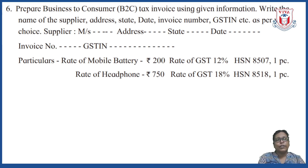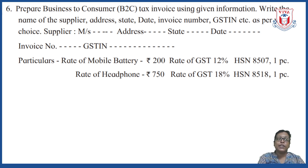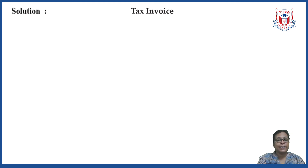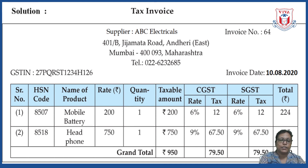We need to prepare columns: serial number, HSN code, name of product, rate, quantity, taxable value, then CGST and SGST (each with rate and tax amount columns), and finally total. The tax invoice heading goes at the top. I have already prepared the tax invoice and will now explain it.